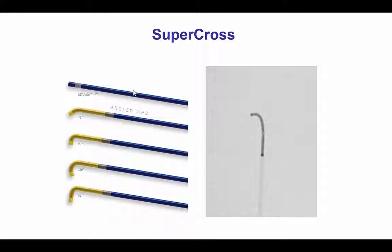Unfortunately, the Venture as of 2017 is on recall. However, there are some other options for angled microcatheters, such as the Supercross, which comes with pre-shaped angles between 45 and 120 degrees. The Supercross has a radio-opaque tip and can essentially provide similar support to the Venture catheter, although this is not an adjustable angle, but rather a preformed pre-shaped angle.